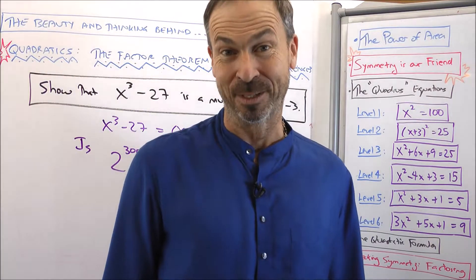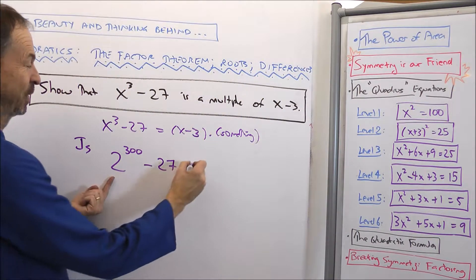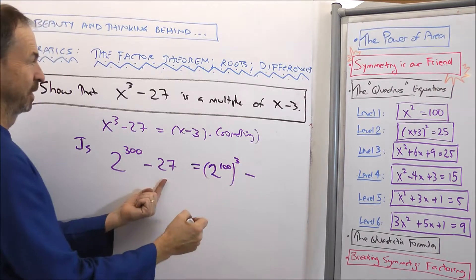Turns out it's composite, and we can see that now, because 2 to the 300th is really 2 to the 100th cubed minus 27.